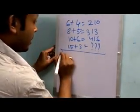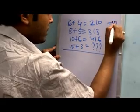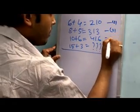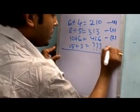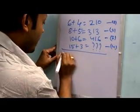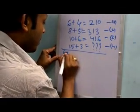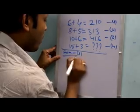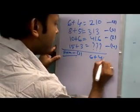Let's denote each row of equation as 1, 2, 3, and 4. From row 1, it's 6 plus 4 equal to 210.